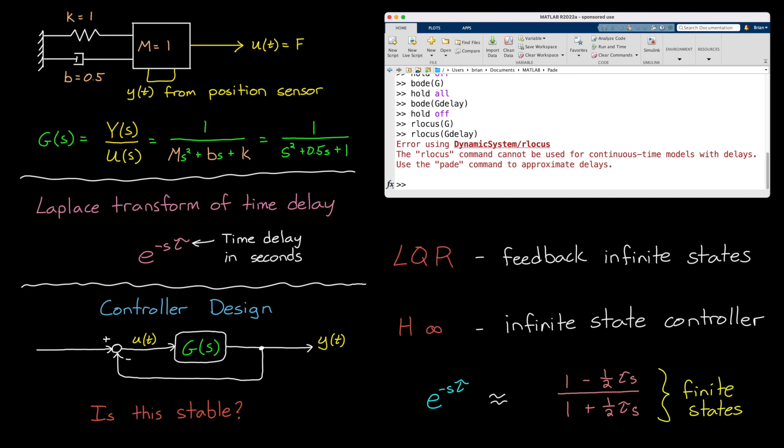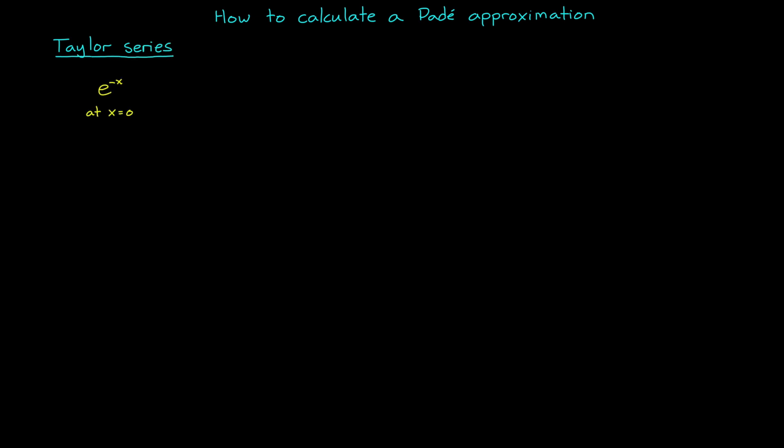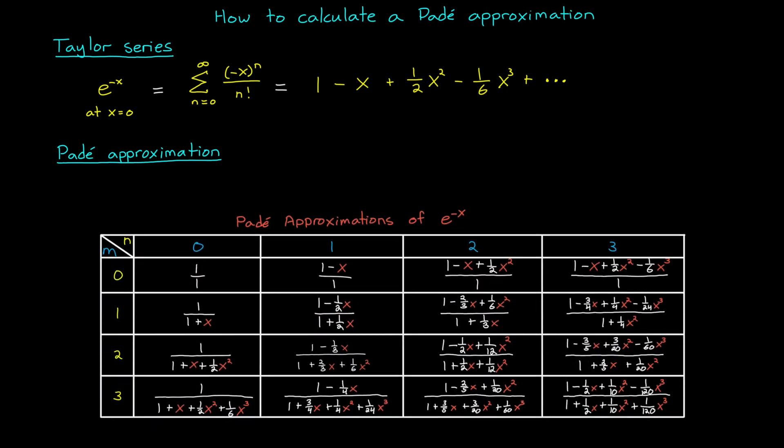So let's look at how we can actually calculate a Padé approximation of e to the minus s tau. There are several different methods, but the one that I want to walk through in this video is actually by calculating a Taylor series first. The Taylor series for e to the negative x at x equals zero is the summation from n equals zero to infinity of negative x to the n divided by n factorial, which can be expanded to 1 minus x plus x squared over 2 minus x cubed over 6 and so on. To convert this into a Padé approximation, we first need to decide the order of the rational polynomial that we want.